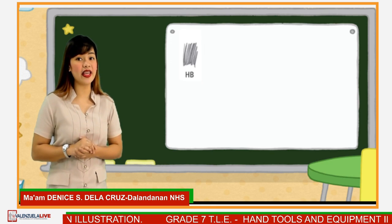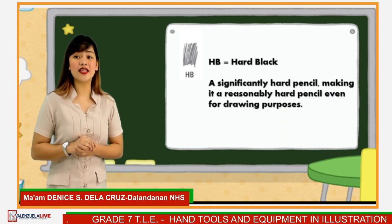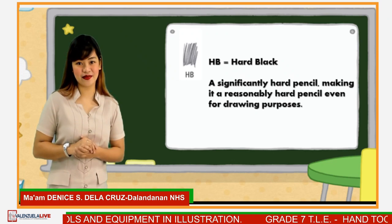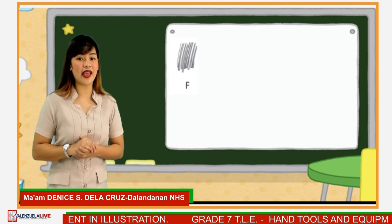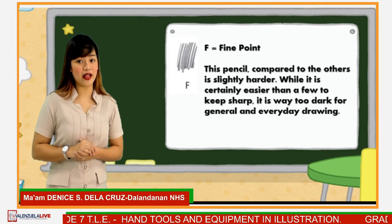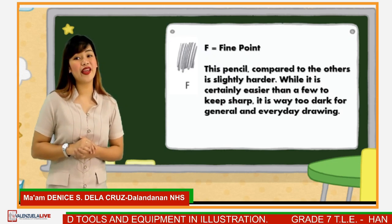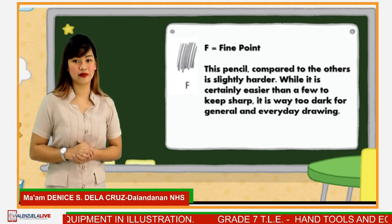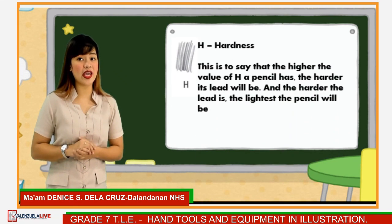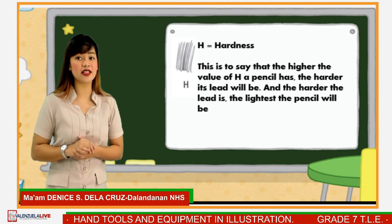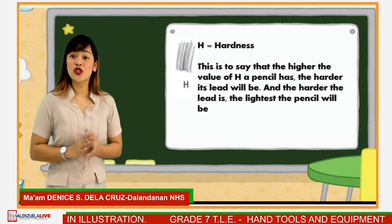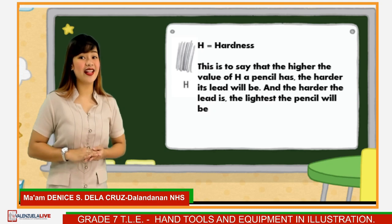The next type of pencil is the HB or hard black. This is a significantly hard pencil, making it reasonably suitable even for drawing purposes. Next is the letter F or fine point. This pencil compared to the others is slightly harder, and while it is easier to keep sharp, it is way too dark for general everyday drawing. The fourth type is the letter H or hardness. The higher the value of H a pencil has, the harder its lead will be, and the harder the lead, the lighter the marks. Soft pencils create darker marks, while hard pencils create lighter marks.